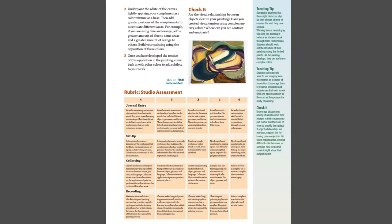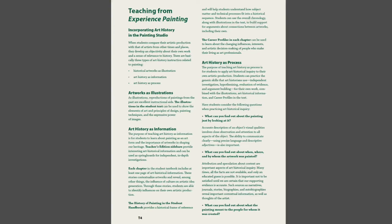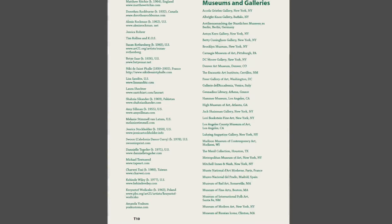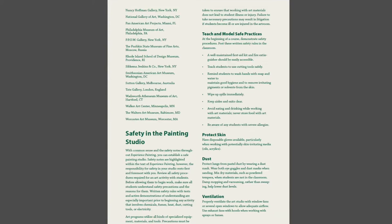The first section of the teacher edition offers general information about teaching with this textbook, including ways to incorporate art history, using the program's rubrics and assessment tools, and teaching about careers. A list of artists whose works appear in the student text clearly demonstrates the time periods and countries represented. The list of contemporary artists also includes artist websites. A list of museums and galleries and a review of safe classroom painting practices rounds out the section.